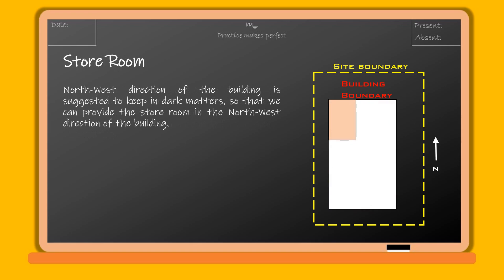The northwest direction of the building is suggested to be kept for darker matters, so we can provide the store room in the northwest direction of the building.